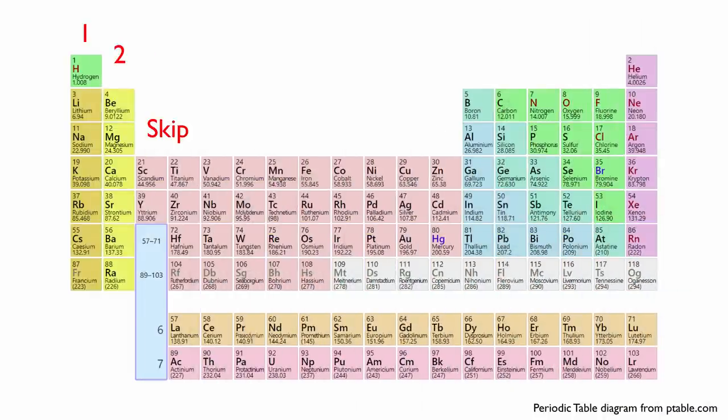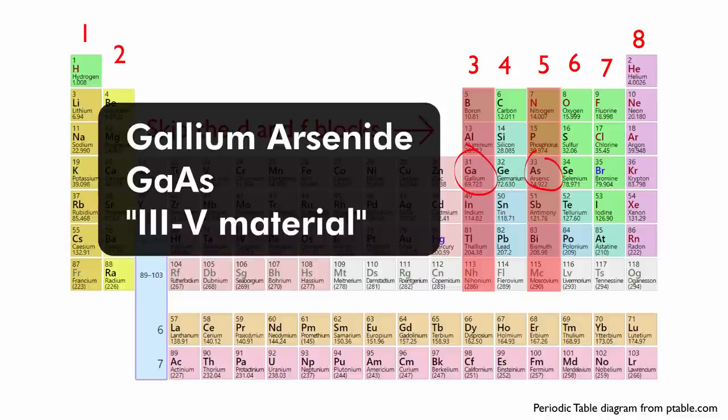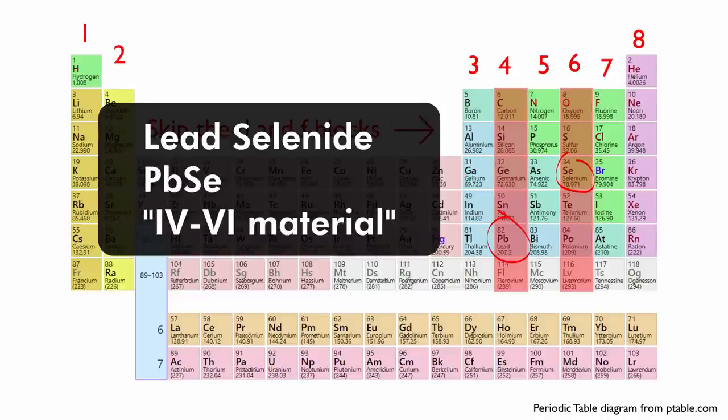I just re-watched it and I think the most important bit of jargon that isn't immediately explained is the use of the phrase 3-5 or 4-6 semiconductor. A 3-5 material just means it's a compound with an element from the third column of the periodic table and the fifth column stuck together. Gallium arsenide would be a 3-5 compound and lead selenide would be a 4-6 compound. Anyway, I hope you find it interesting and if you have any questions, drop them below in the comments.